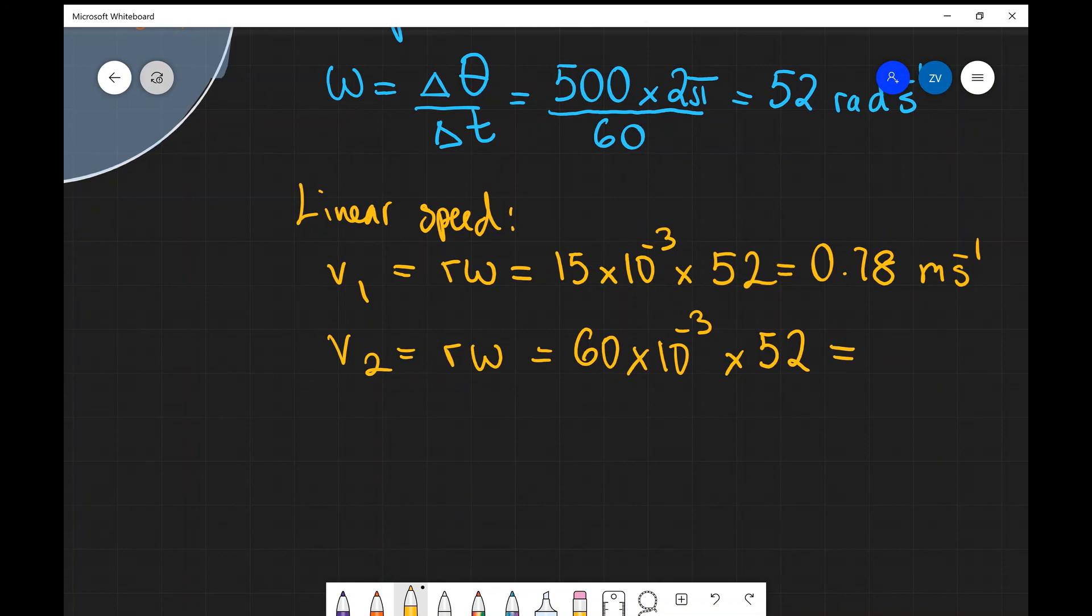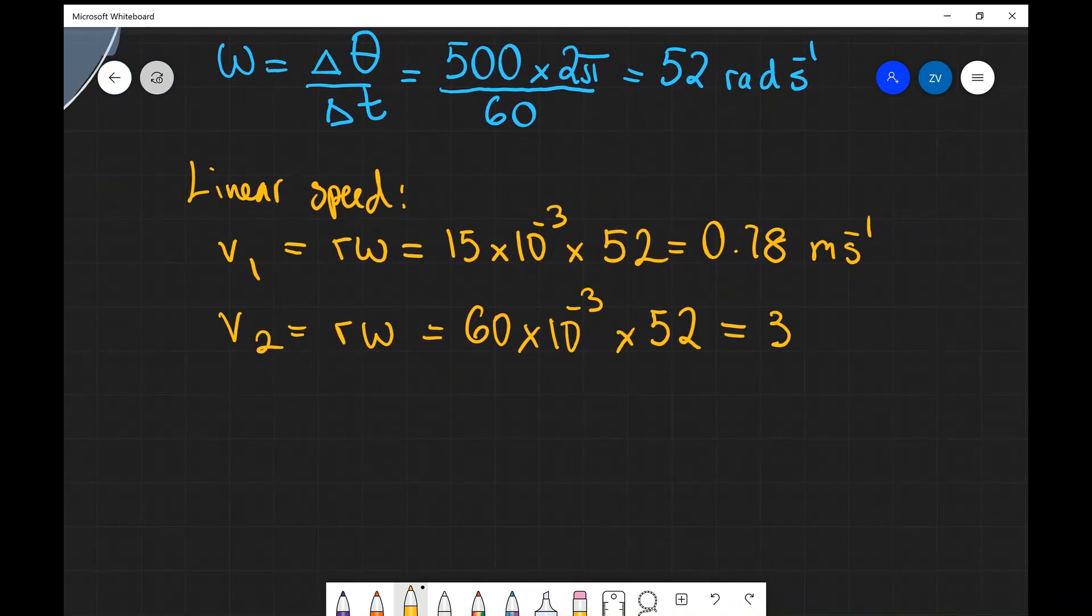And once again, let's put that into a scientific calculator. So it'll be 60 times 10 to the power of minus 3 times 52, which is going to give us 3.12 meters per second.